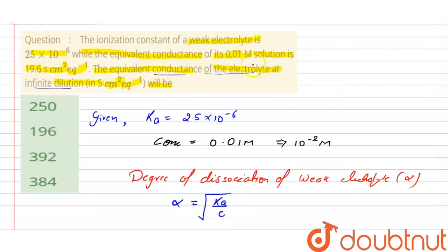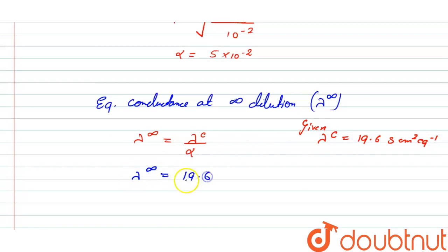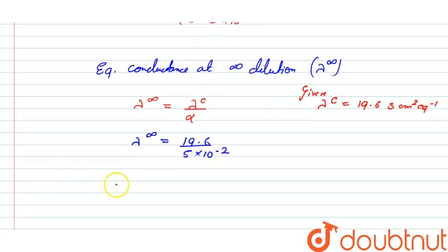The equivalent conductance at concentration 0.01 molar is 19.6 S·cm²·eq⁻¹. So λc = 19.6. Putting this value in: λ∞ = 19.6 / (5×10⁻²), which gives λ∞ = 392.